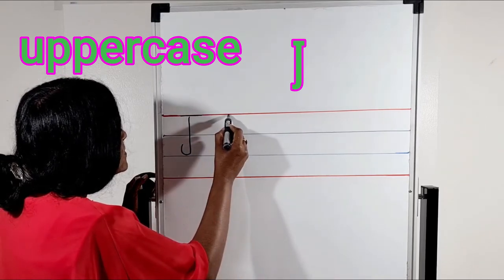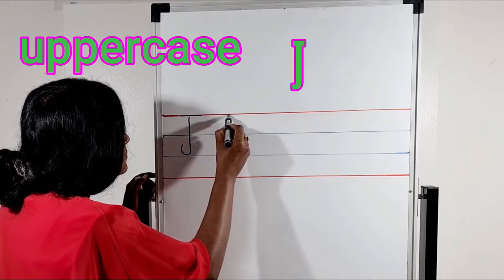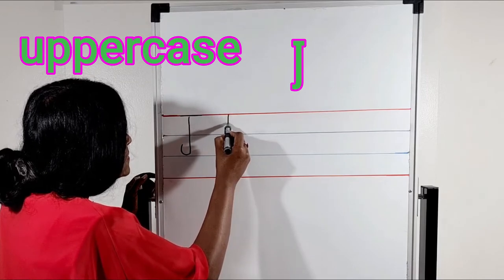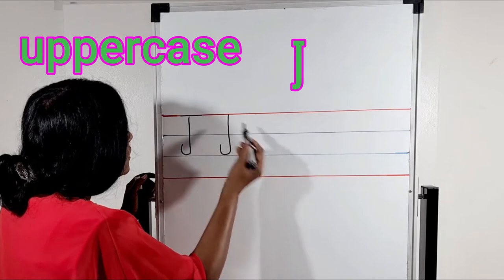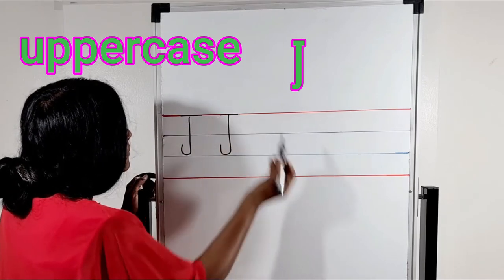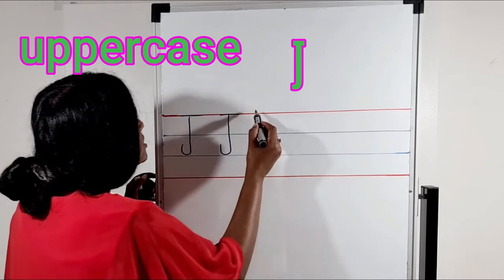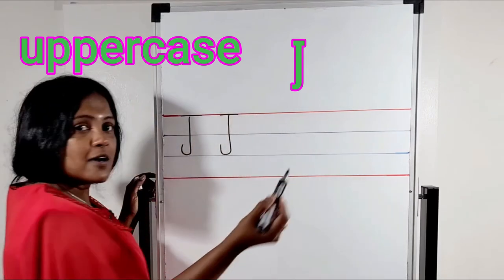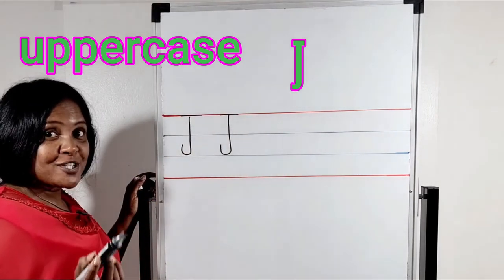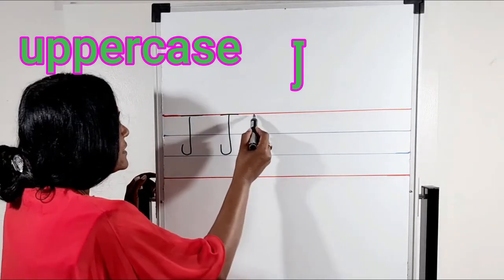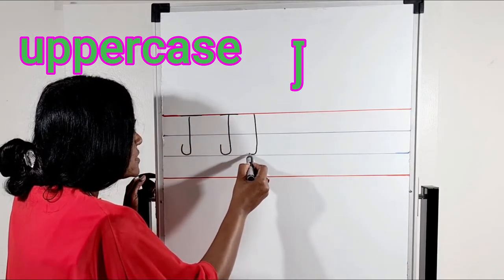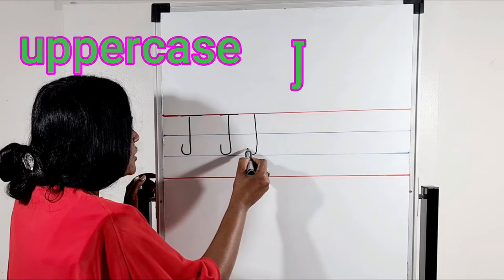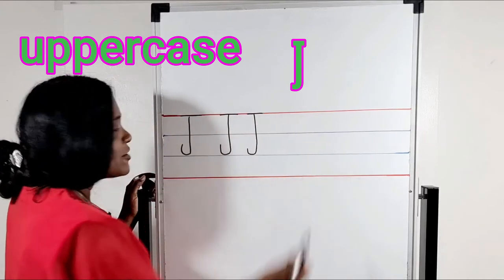One more time. Start from the headline and it goes to the second tummy line. Standing line. And hook. And line across. One more time. Look at the board. Standing line. Goes down to the second tummy line. And hook. Go back to the top. Line across.